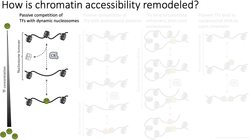There are a number of ways in which chromatin accessibility can be remodeled dynamically. The first general approach is through passive competition of transcription factors. Many nucleosomes have a natural amount of turnover and chromatin remodelers might move nucleosomes around. During this process, a transcription factor may happen to bind to a region that's free of a nucleosome at a given time and therefore start the process of transcription, keeping it open.